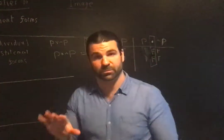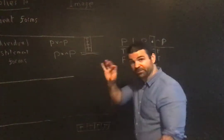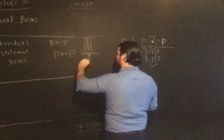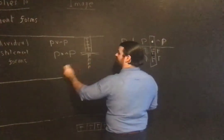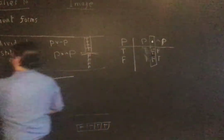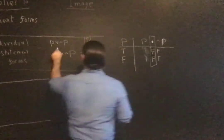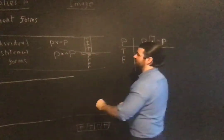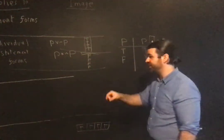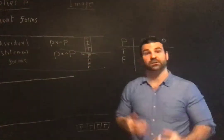Most statement forms you'll be asked to test will have at least two variables, so the image you should associate with contradiction is a column of all false values. For tautology, the image is a column of all T's; for contradiction, a column of all F's.